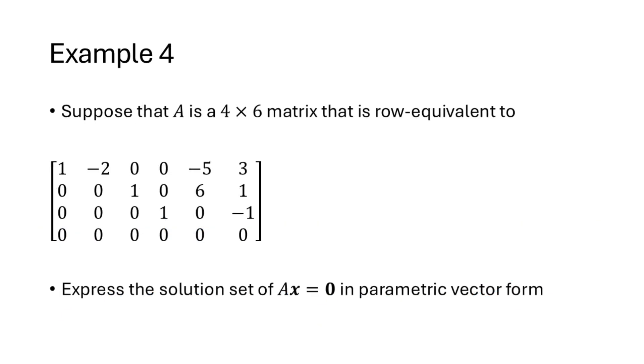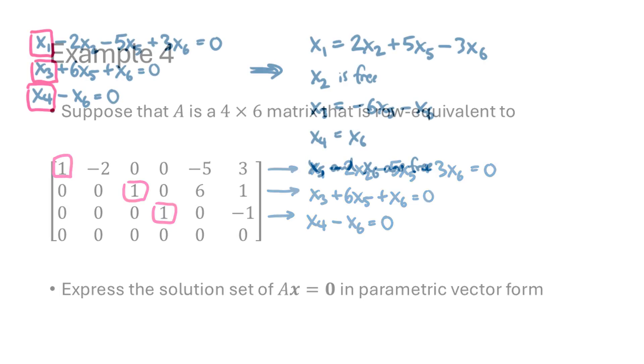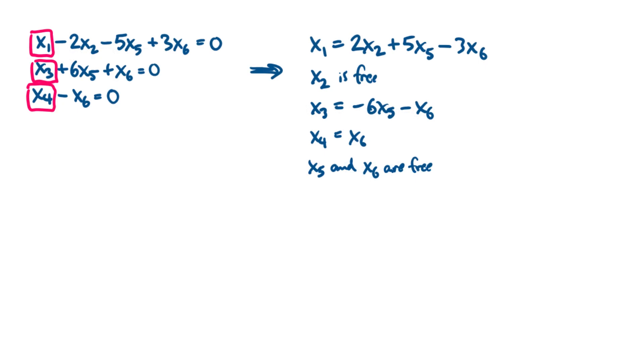Here's another example. Here we have A being a 4x6 matrix that's already reduced for us, and we want to write the solution set of Ax equals 0 in parametric vector form. Keep in mind here that A is a coefficient matrix, not an augmented matrix, so when we write the equations corresponding to each row we have to add equals 0 at the end. So you always want to keep in mind whether you're looking at a coefficient matrix or an augmented matrix when you're working through these kinds of problems. And that lets us write our general solution, which you see here.